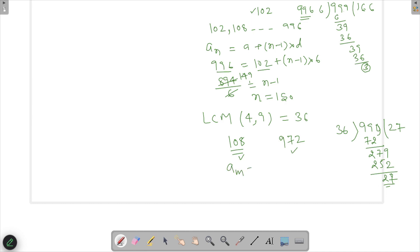So call this as AM equals to A plus M minus 1 into D. And then what do I find out? I will find out AM is 972, A is 108, and then M minus 1 into 36.